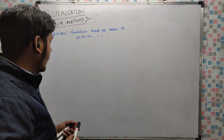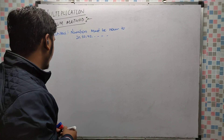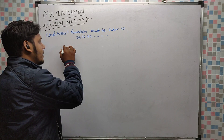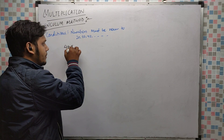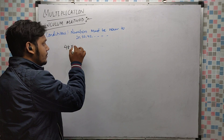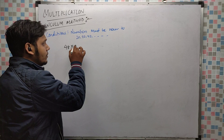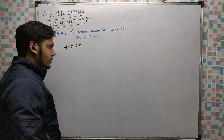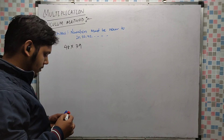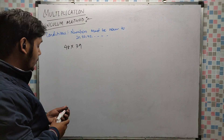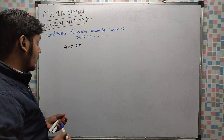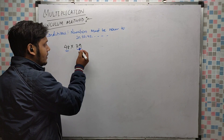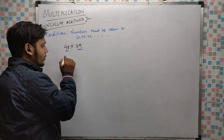Suppose we are going to multiply 48 into 39. So 48 — how can I write it? And 39 — how can I write it? We rewrite each number using its complement near the round number.